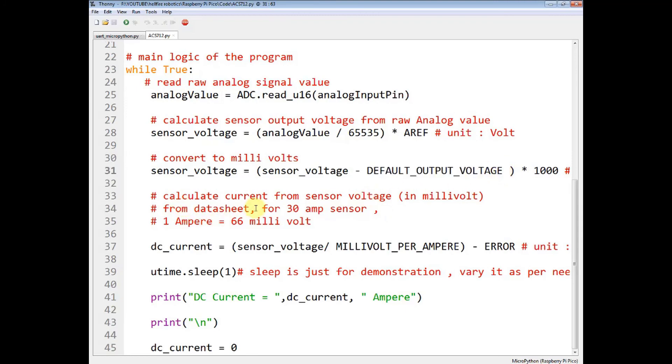Now you have to calculate the current from the sensor voltage. From the datasheet it is given that for 30A sensors, when 1A of current is flowing in the external circuit, 66 millivolts will be produced in the output pin. So DC current is equal to whatever sensor voltage you are getting in millivolts divided by the millivolts per ampere constant minus some steady state error if your sensor is constantly producing some steady state error.